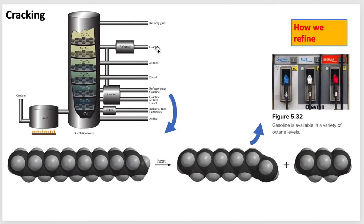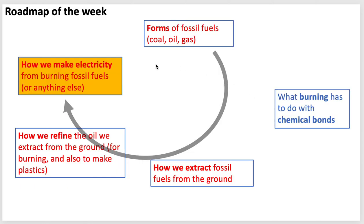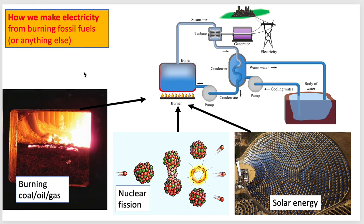That allows you to get more of the high-value components like octane out of it. Here's a schematic of a power plant showing how we make electricity from burning fossil fuels or anything else. There's one circuit — the water that turns the turbines — which gets condensed back, comes in as liquid, gets reboiled, runs the turbines again. Then there's a second system that cools that water as it goes back into the boiler — the condenser system — which is often a lake or an ocean. So two separate water systems.